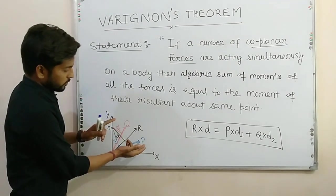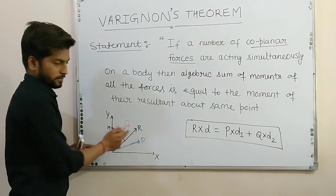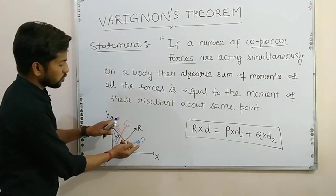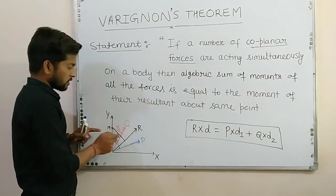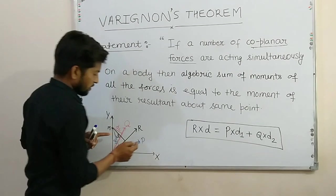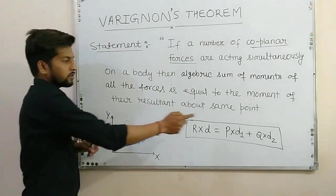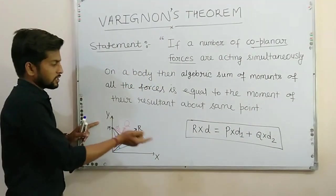Let two forces be P and Q and their resultant is R. So Varignon's Theorem states that both forces' moment about any point. Moment of P is what? P into D1, P into the perpendicular distance. Similarly, Q. Moment of Q is Q into D2, Q into perpendicular distance.